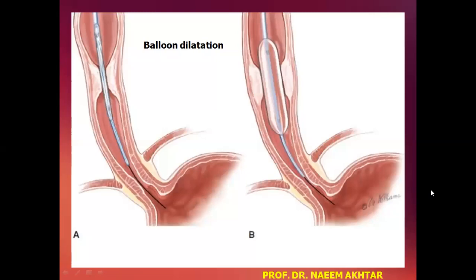In this figure you can see that this is the site of the stricture of the esophagus, and this has been dilated with the help of balloon dilatation. The catheter is passed and this is the area of the balloon. When this balloon is inflated it will lead to dilatation of the stricture area. In this way, repeated attempts of balloon dilatation may relieve the symptoms of dysphagia.